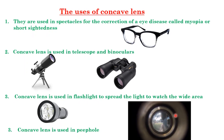Concave lenses are also used in peepholes (spy holes) in doors. Light coming from a wide area falls on the concave lens, and after refraction it goes parallel to our eyes, allowing us to see a wide area through the tiny hole. So these are the uses of convex and concave lenses. We will study the detailed working of telescopes in class 12.